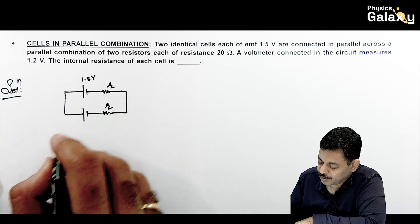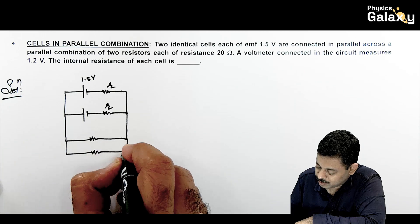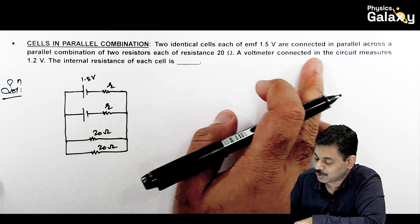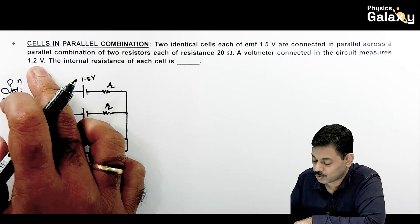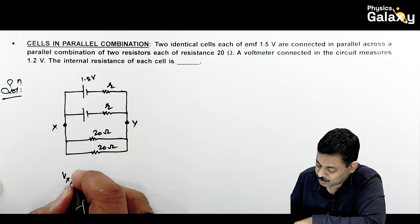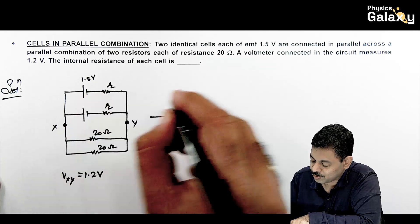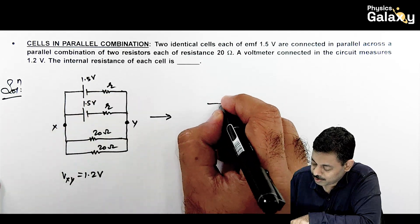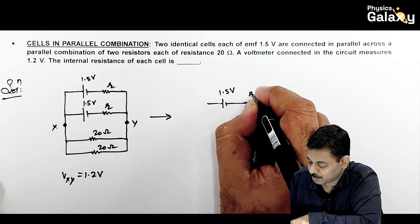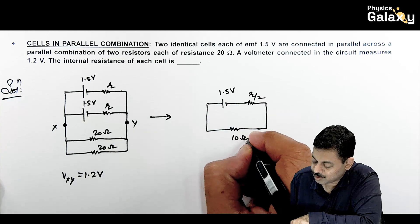Two 20 ohm resistances are connected in parallel, giving an equivalent resistance of 10 ohm. For two identical cells in parallel, the equivalent EMF remains 1.5 volt and the equivalent internal resistance is r/2. The potential difference across terminals x and y is given as 1.2 volt.